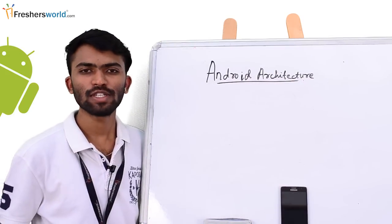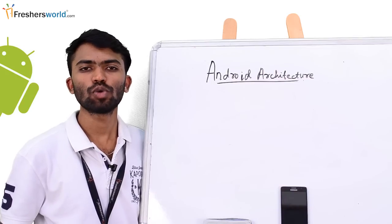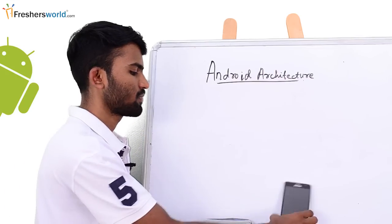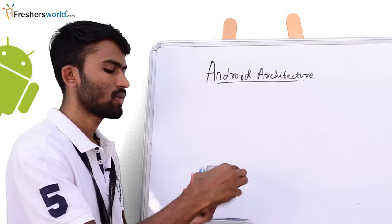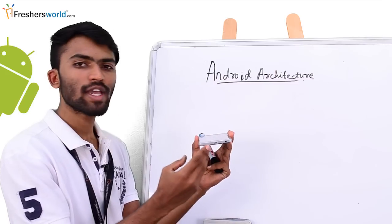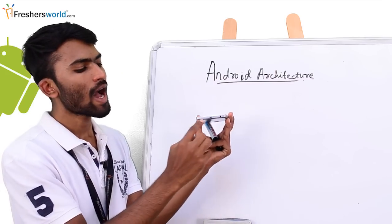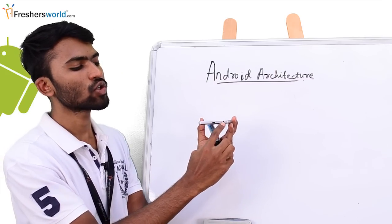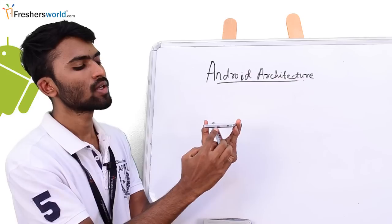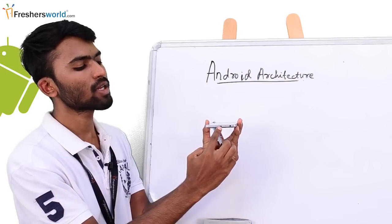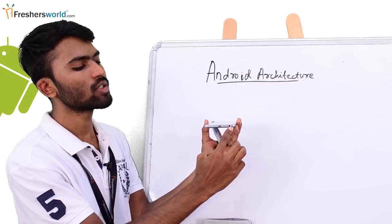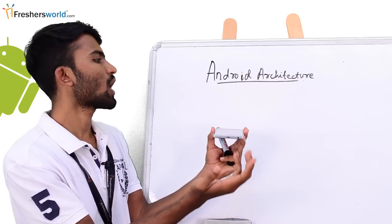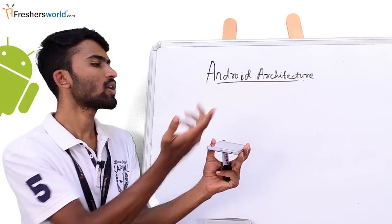Before starting with Android architecture, I just want to show you my Samsung phone. If you can't see my Samsung phone, I have a charger plug-in, I have a headset plug-in. So what is this? This is nothing but a device driver. How it is related to Android architecture? So let's start.